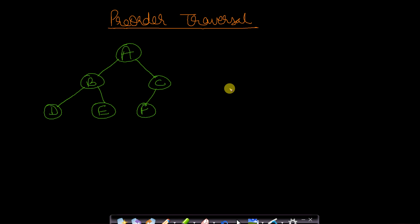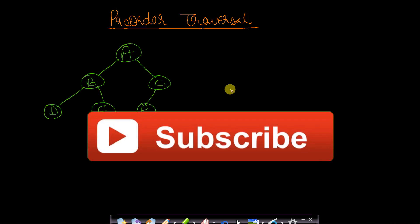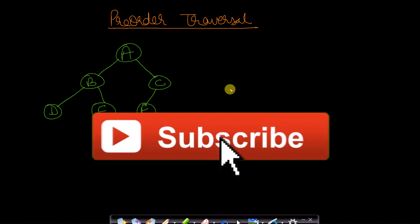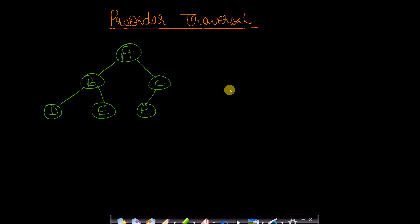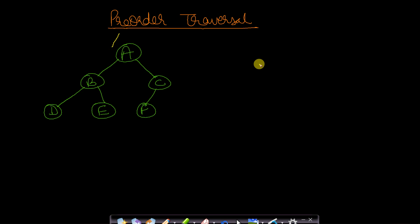Hello guys, welcome back to Tech Dose. In this video we will see a very simple trick in order to find pre-order, in-order, and post-order traversal of a given binary tree. Let us assume that we have been given a binary tree. To calculate the pre-order, you will start from the first node, and whenever you reach a node for the first time, you will give it as output.